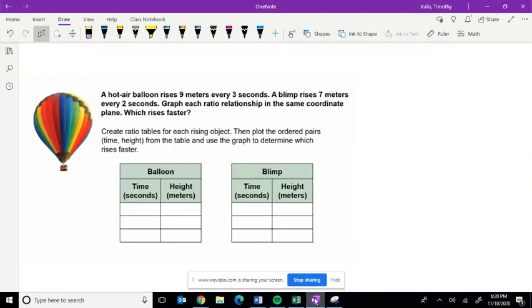In this video, we're going to create ratio tables and then graph what we gain from the ratio tables to determine which balloon, whether it's the hot air balloon or the blimp, rises faster.